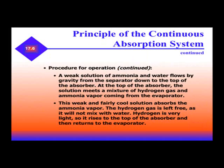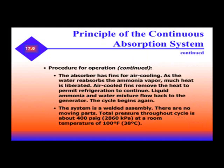A weak solution of ammonia and water flows by gravity from the separator down to the top of the absorber. At the top of the absorber, the solution meets a mixture of hydrogen gas and ammonia vapor coming from the evaporator. This weak and fairly cool solution absorbs the ammonia vapor. Hydrogen gas is left free as it will not mix with water. Hydrogen is very light, so it rises to the top of the absorber and returns to the evaporator. The absorber has fins for air cooling. As water reabsorbs the ammonia vapor, much heat is liberated. Air-cooled fins remove the heat to permit refrigeration to continue. Liquid ammonia and water mixture flow back to the generator and the cycle begins again.